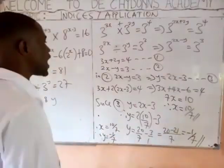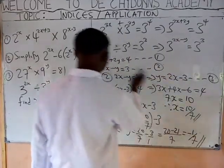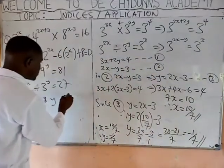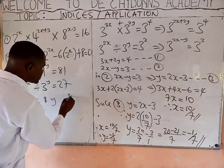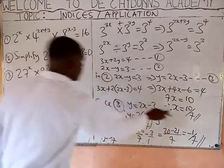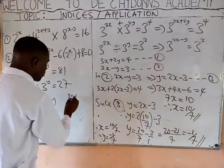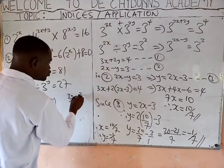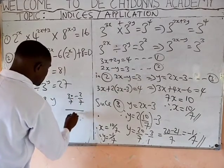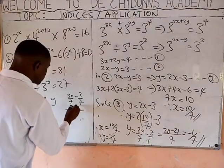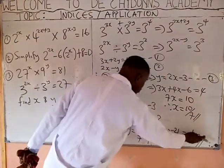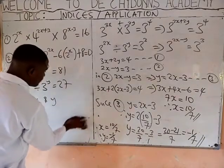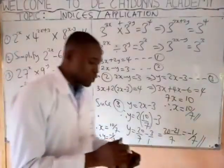If you want to verify your answers, take minus 1 over 7 and put it here, and take 10 over 7 and put it here to test. You will get 30 over 7 plus minus 2 over 7, giving 28 over 7, which equals 4. That means your answers are correct. So X is 10 over 7 and Y is minus 1 over 7.